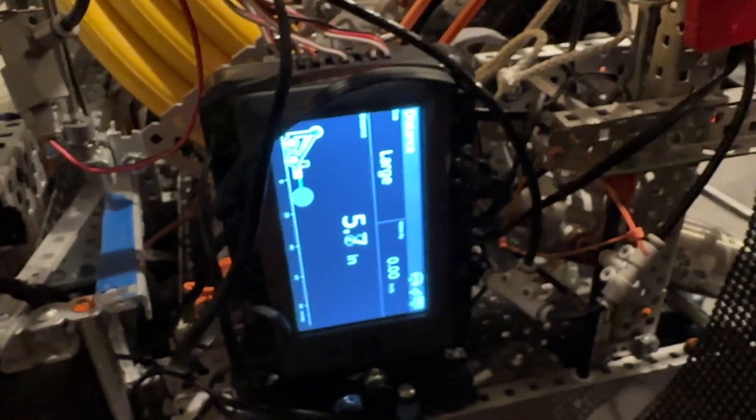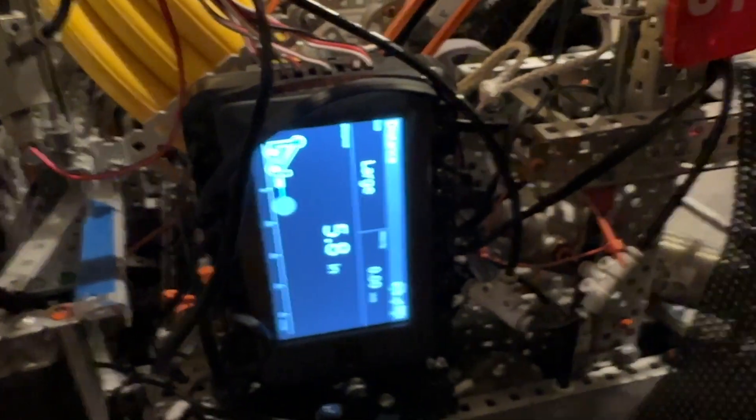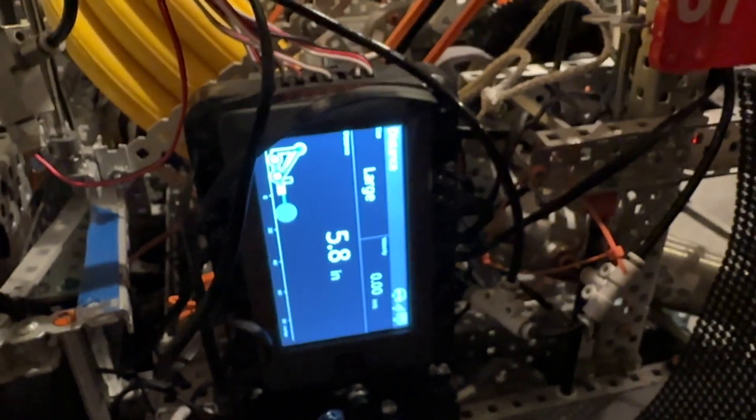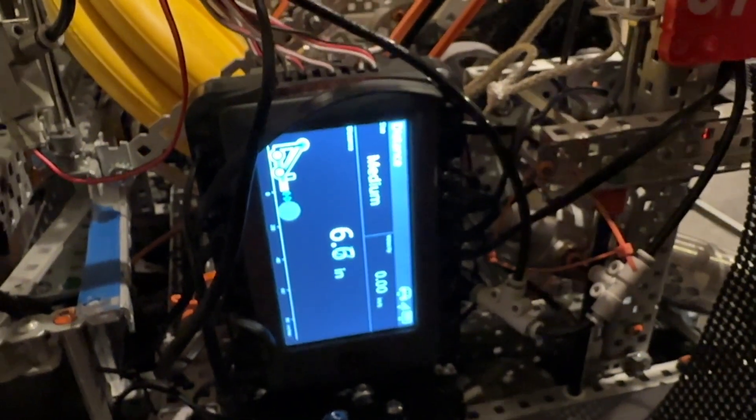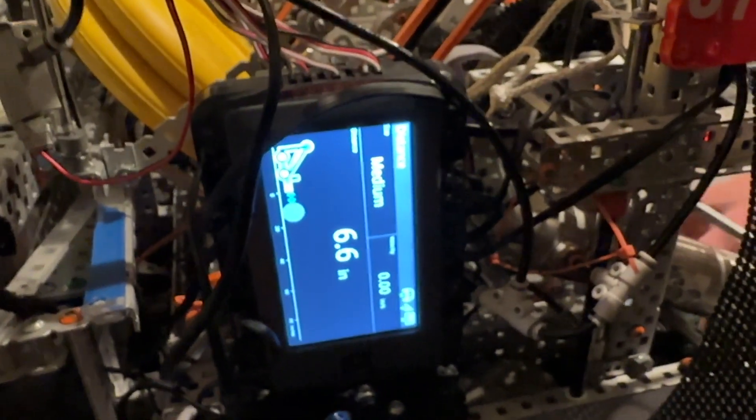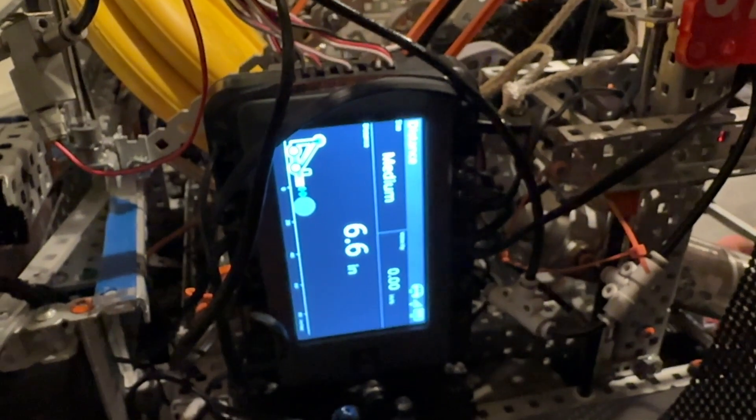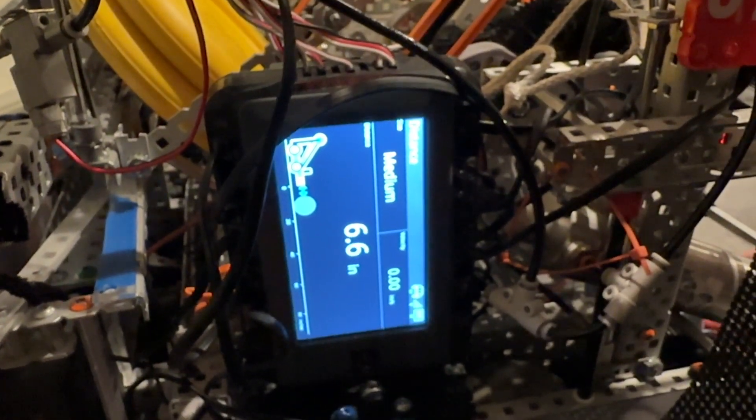It's been useful in autons too because if like the three stack or something doesn't fall over the same way then it can know it's missing a disc and it goes and picks up another one. So all in all that's probably one of the coolest things on this robot.